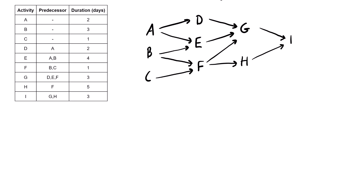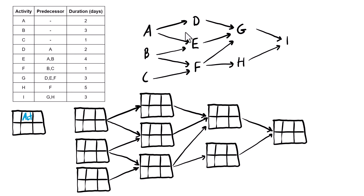The next step is to redraw it with a nicer format following our convention, where we have the activity label in the top center and the duration in the bottom middle. Then we're going to fill out the values for early start, early finish, late start, and late finish.